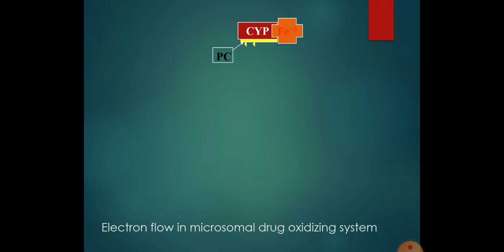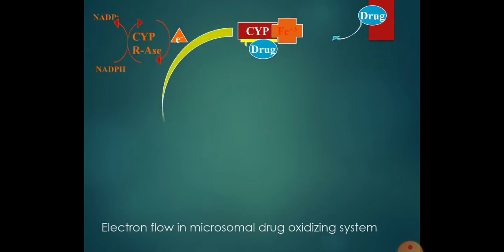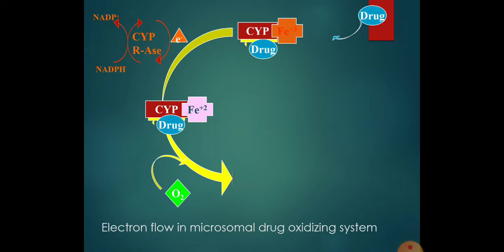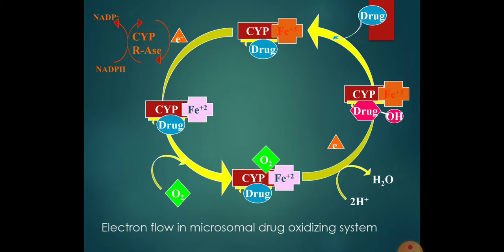Cytochrome P450 is a hemoprotein - a chromoprotein - where P stands for pigment and 450 is the nanometer of light it absorbs maximally in the presence of carbon monoxide. This is how Cytochrome P450 acts in our body - oxygenation occurs, oxygen is added to the drug, followed by removal, and then the drug with the hydroxyl group is processed within the Cytochrome P450 system.